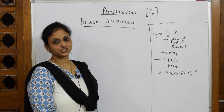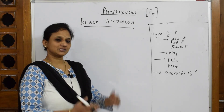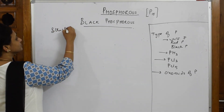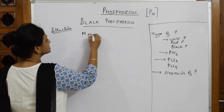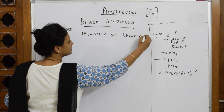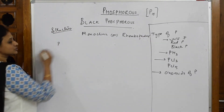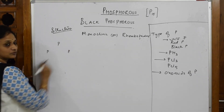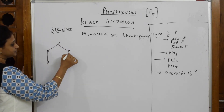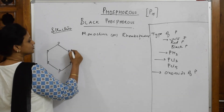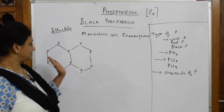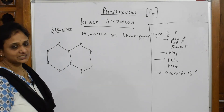Now the third type: black phosphorus, which is a simple concept. Black phosphorus has a monoclinic or rhombohedral structure. In this structure, phosphorus atoms are arranged in P6 units — six phosphorus atoms linked together — and these P6 units keep multiplying and linking to form the black phosphorus structure.